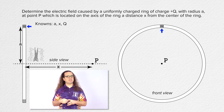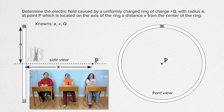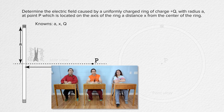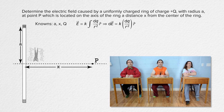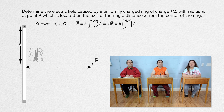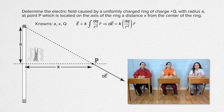We can start with the equation for the electric field caused by a continuous charge distribution. However, the direction of the electric field at point P is not the same for every charge dq on the ring. So we look at dE, the electric field caused by every dq, which equals the Coulomb constant times dq over r squared, times unit vector r. If we put a small positive test charge at point P, then the direction of dE caused by charge dq is down and to the right.